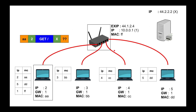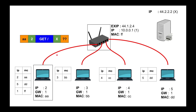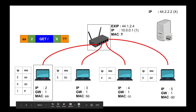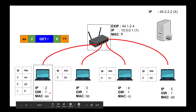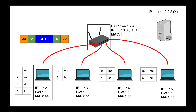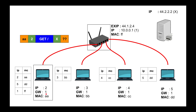Now let's spice things up. What if I want to connect to a machine outside my subnetwork — for example Google at 44.2.2.2? That IP address is not within my subnet of 10.0.0.x. The moment my machine detects this, it says: I cannot communicate directly with that IP because it's not in my subnet. But my gateway can. Whenever the IP is outside the subnet — based on the subnet mask, like /24 — the machine automatically sends the packet to the gateway.